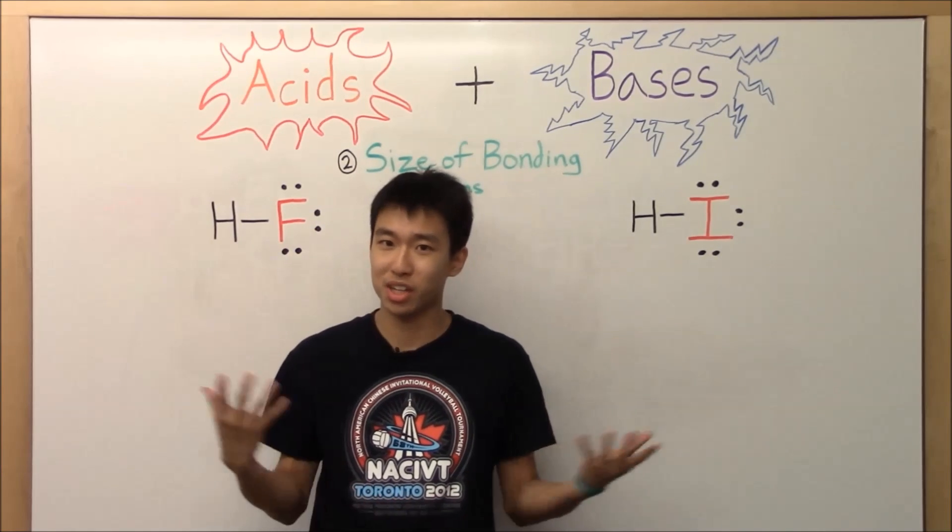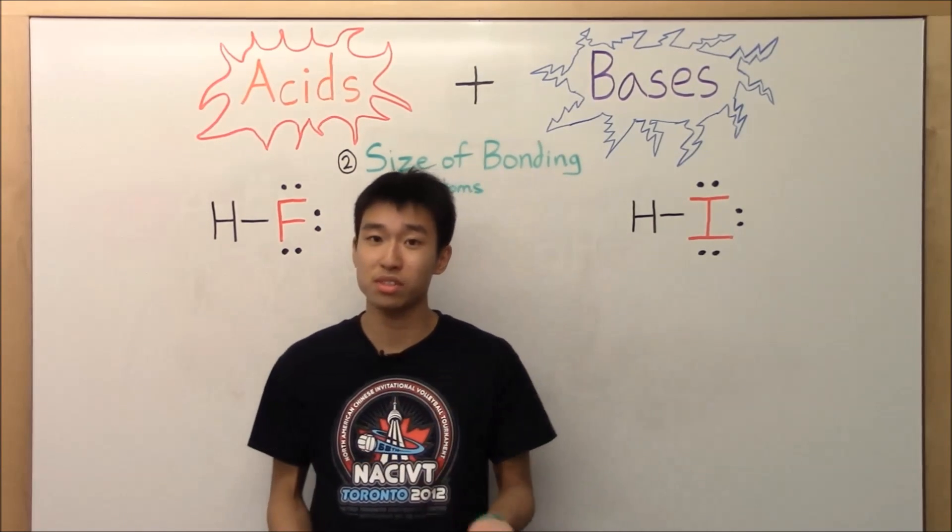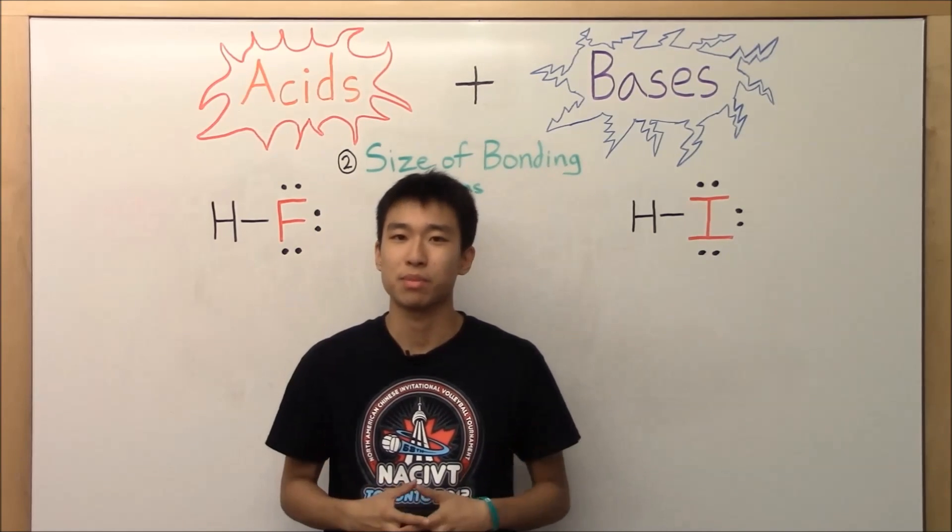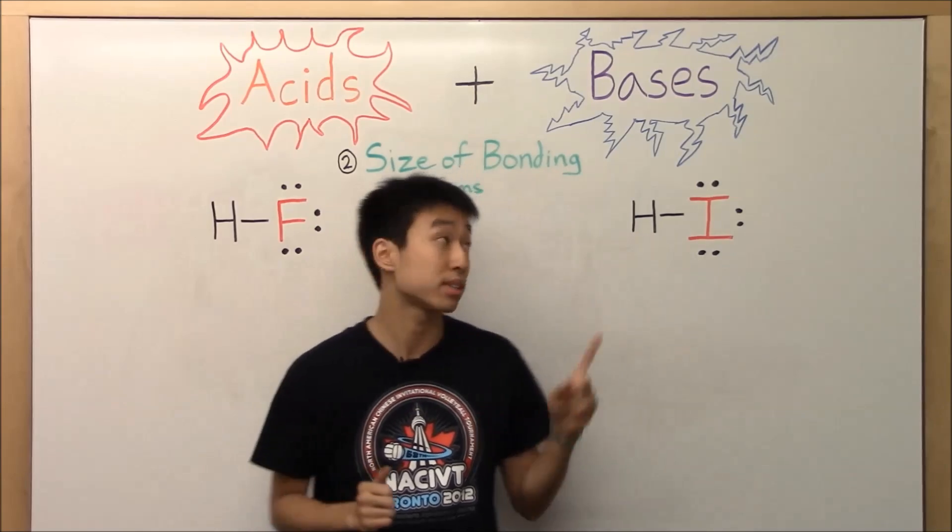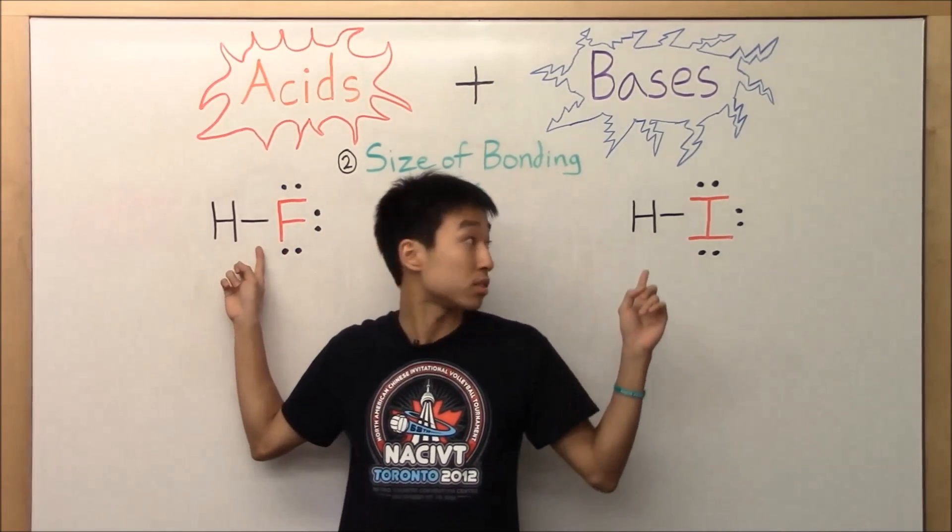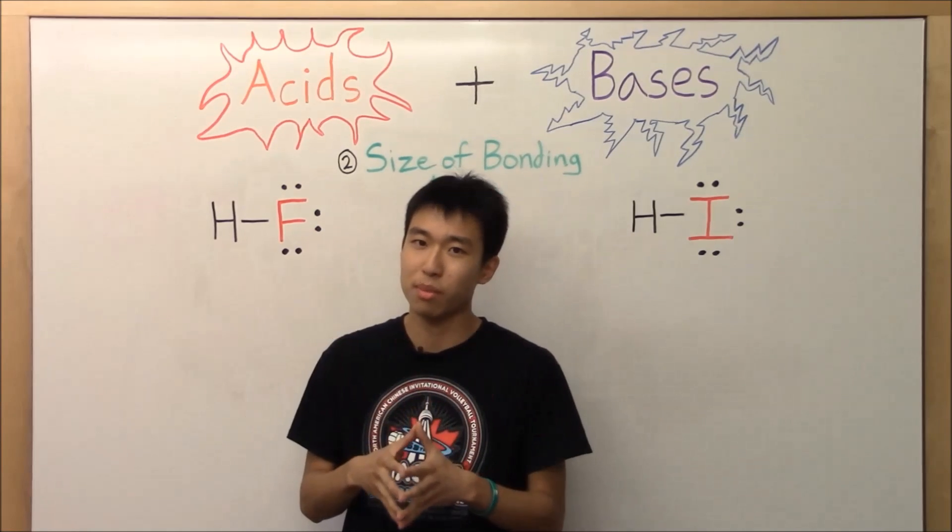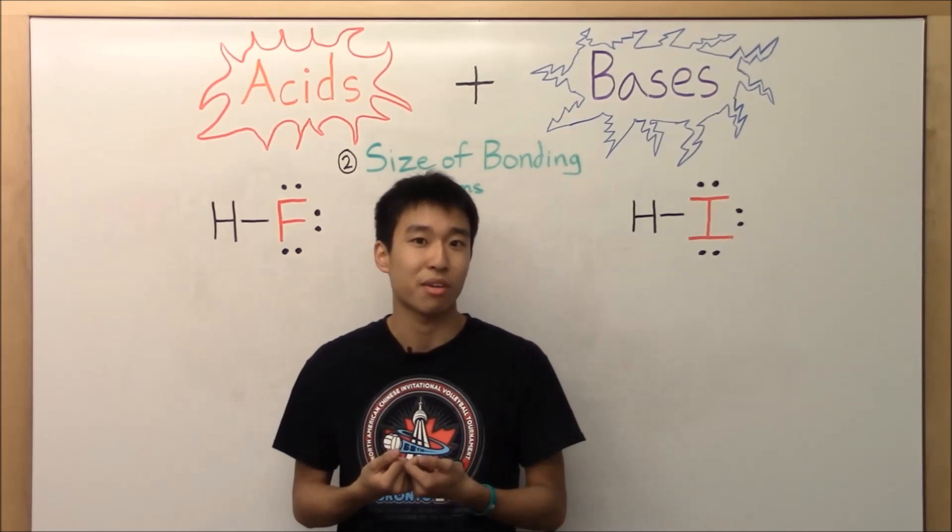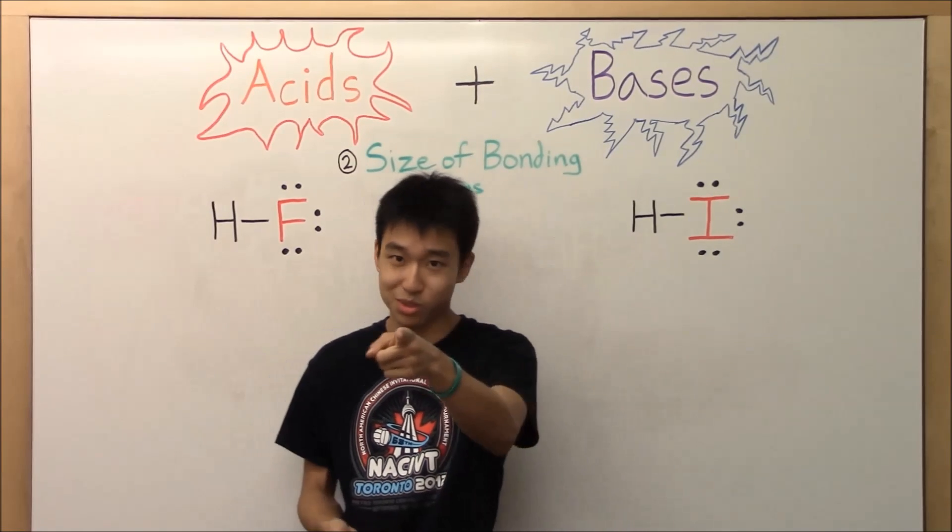Hello! So if you're joining me now, then you guys probably already watched video one and two of this series. If you haven't, check out part one, part two right here. Okay, so in this video what I'm going to be talking about is how the size of the bonding atoms affect how strong the bonds with hydrogen are. And how strong the bond is with hydrogen is going to determine how strong of an acid or base it is. So that's pretty important for you guys, so stay tuned!